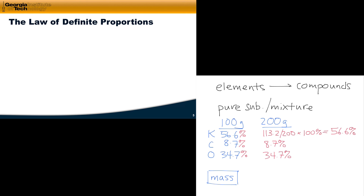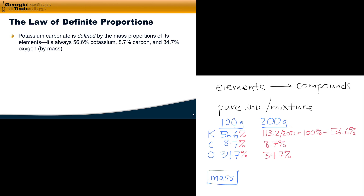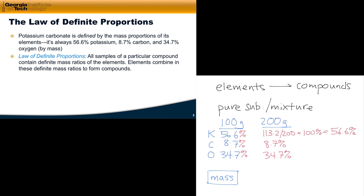This leads us to a law of nature called the law of definite proportions, which states that a compound is defined by the mass proportions of its elements. No matter the identity of the compound, all samples of a particular compound contain definite mass ratios of their elements — uniform mass percentages independent of the sample size. If you're already thinking that matter is made of atoms, this should make intuitive sense.